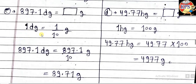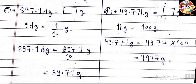Next, question C: 8897.1 is given in decigrams and you have to convert it into grams. 1 decigram equals 1 upon 10 grams, so 8897.1 decigrams equals 8897.1 upon 10. When dividing, the decimal point shifts to the left. One zero means we shift the point before one number. So the answer is 889.71 grams.